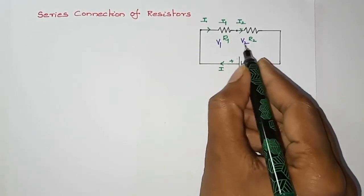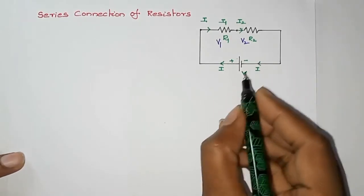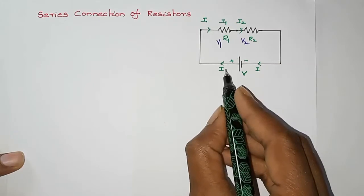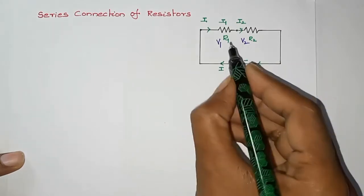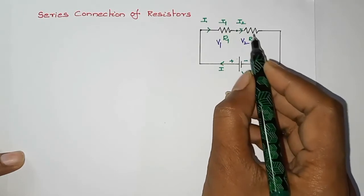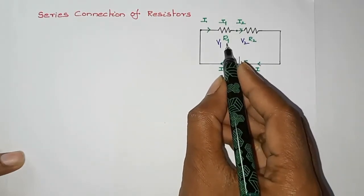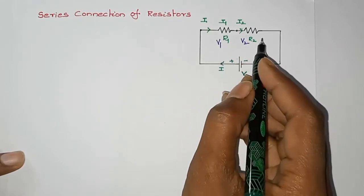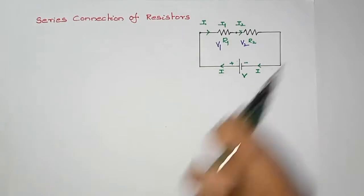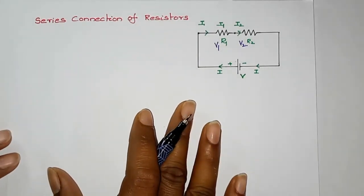We are going to connect two resistances. We will connect V1 and R2. Our relationship is the same. The current is in series.